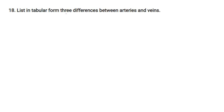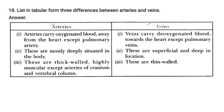List three differences between arteries and veins in tabular form. Arteries carry oxygenated blood away from the heart except the pulmonary artery; veins carry deoxygenated blood towards the heart except the pulmonary veins. Arteries are mostly deeply situated in the body; veins are more superficial. Arteries are thick-walled and highly muscular except those of the cranium and vertebral column; veins are thin-walled.